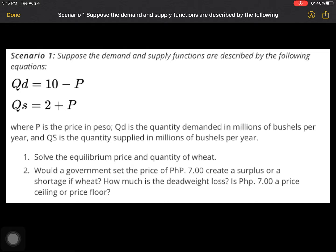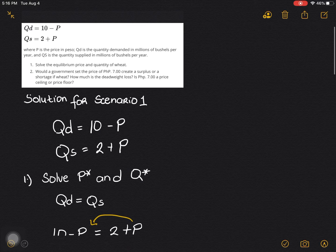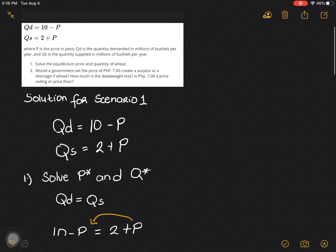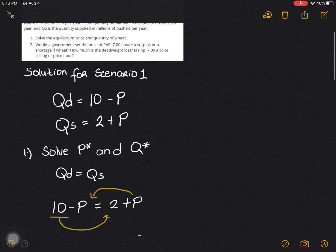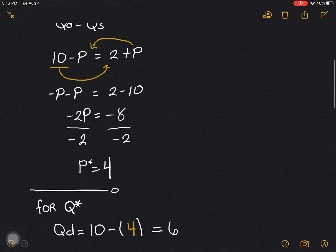So we are asked to solve the equilibrium price and quantity of wheat, and what would happen if the government will set a particular price at 7 pesos. It asks us to determine whether it will create a surplus or shortage, how much is the deadweight loss, and is the 7 pesos considered to be a price ceiling or price floor. So scenario number one is just the same process as we had in the first video solving the quantity demand and quantity supply, equilibrium price, and equilibrium quantity.